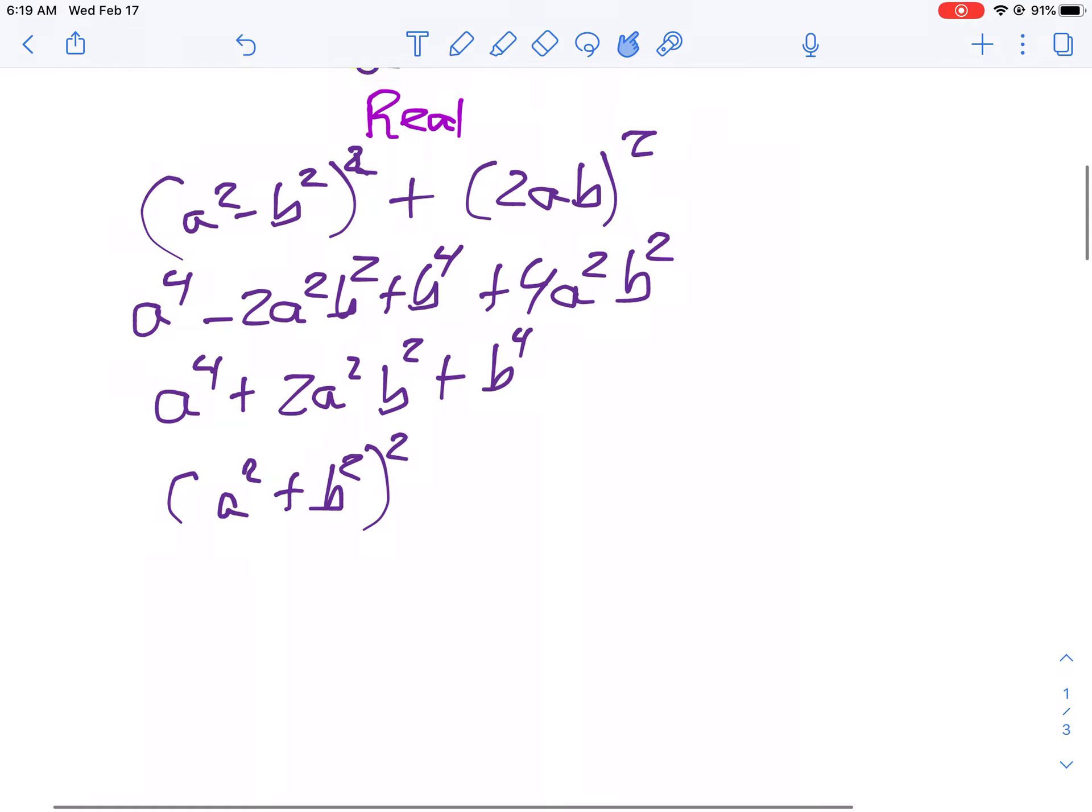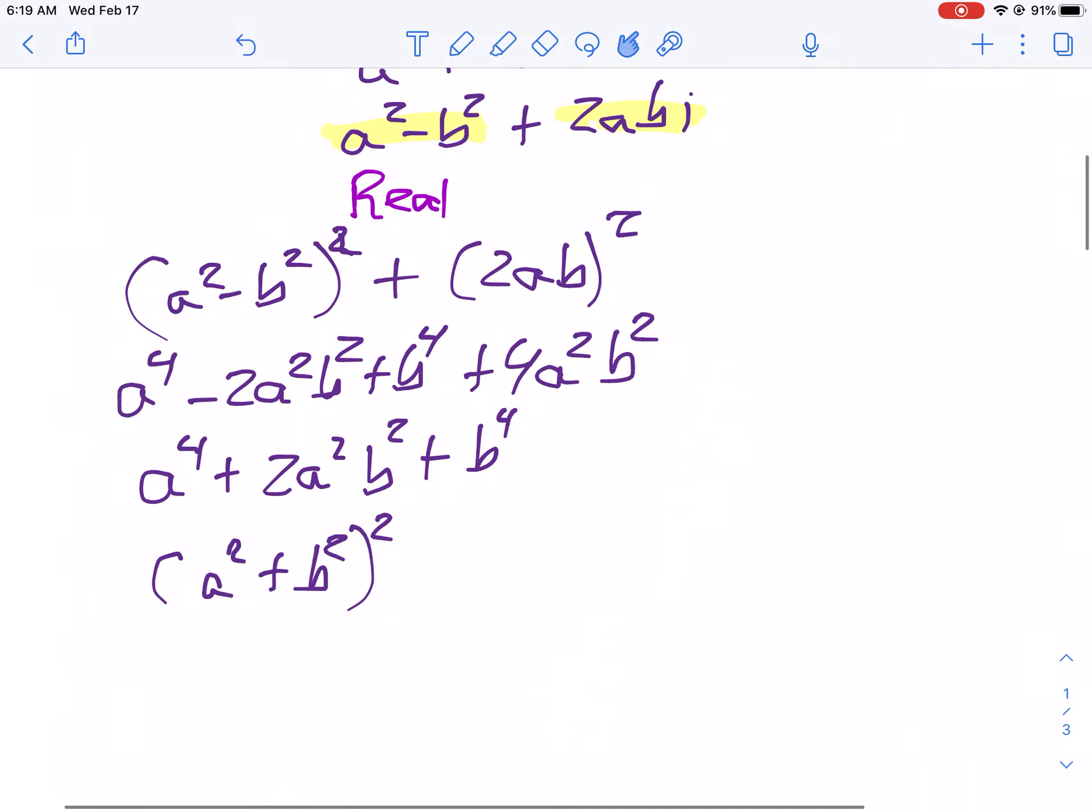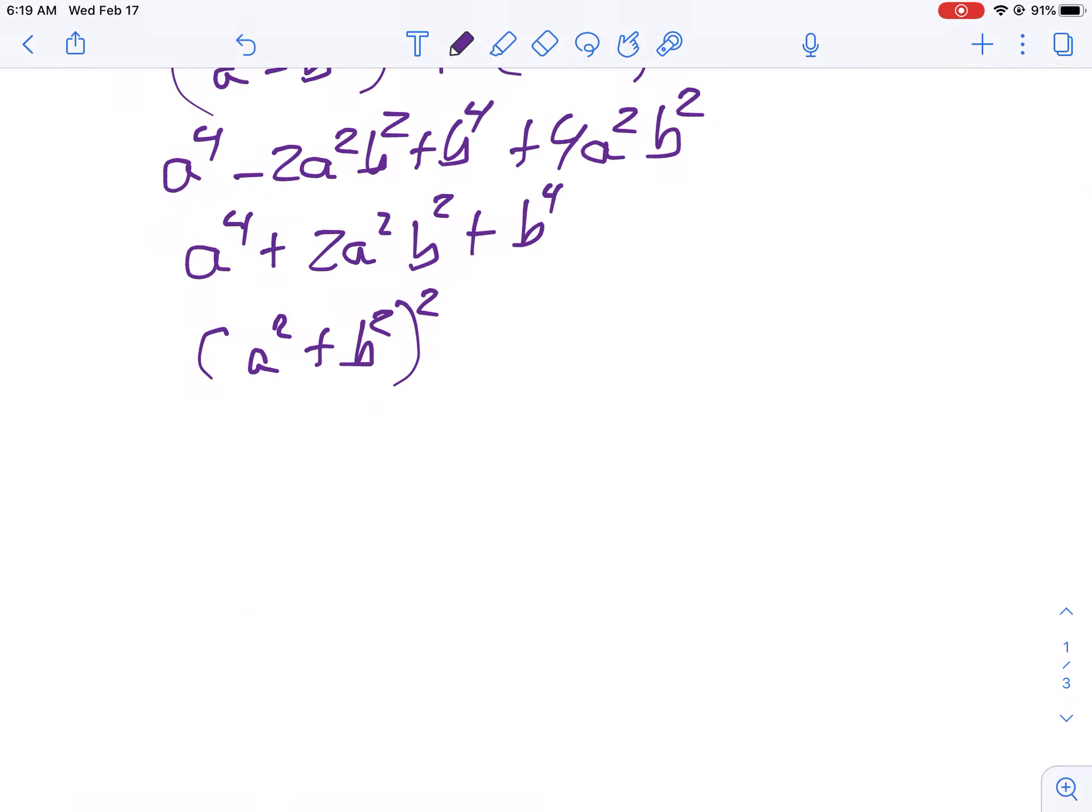From our definition, remember A squared plus B squared, that's C squared. So in other words, A squared plus B squared is C squared. So I have C squared squared, which is C to the fourth.